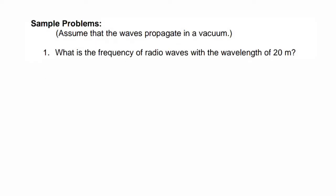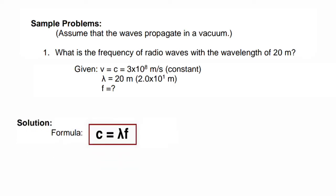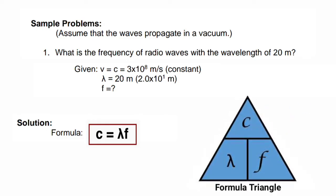Using the wave equation, let's try to solve the following problems. Sample problem number one: what is the frequency of radio waves with the wavelength of 20 meters? Now to solve this problem, we have to first identify the given. So given are: the speed of light, 3×10⁸ meters per second, that is constant; the wavelength 20 meters; and what is asked is the frequency of the wave.